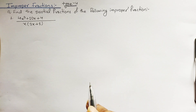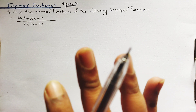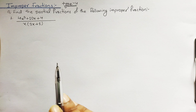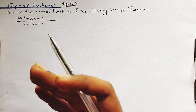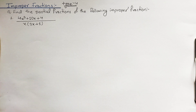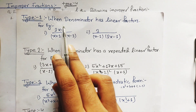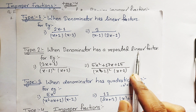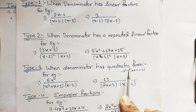Hello everyone, welcome back to Civil Learning Online YouTube channel. This is the fourth lecture on partial fractions. We have learned about three different types of concepts related to partial fraction decomposition. Here is the fourth type — what happens when we face an improper fraction. It will be solved in a slightly different way from what we did in the previous three lectures, which covered linear factors, repeated linear factors, and quadratic factors.